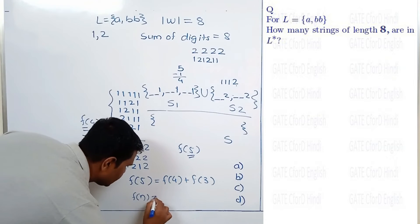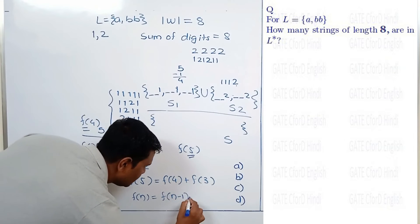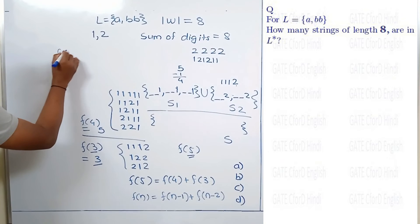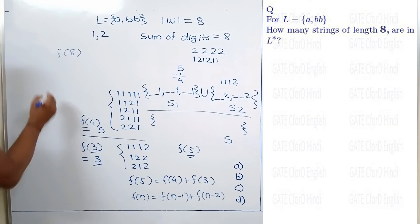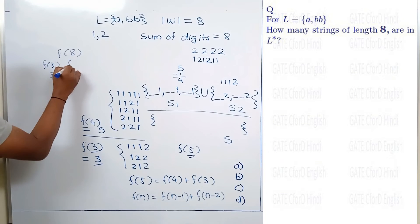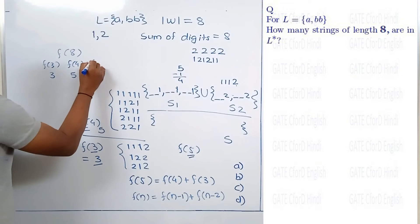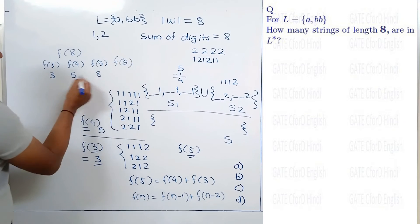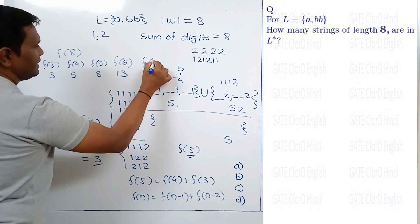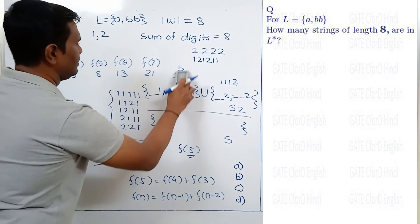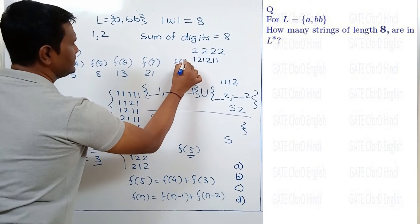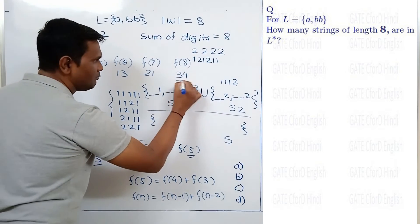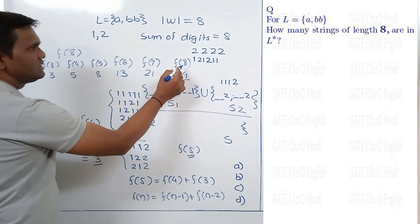The recurrence is f(n) = f(n-1) + f(n-2). Computing up the Fibonacci sequence to f(8), we get 21 + 13 = 34. So there are 34 numbers which contain only digits 1 and 2 and have a sum of digits equal to 8.